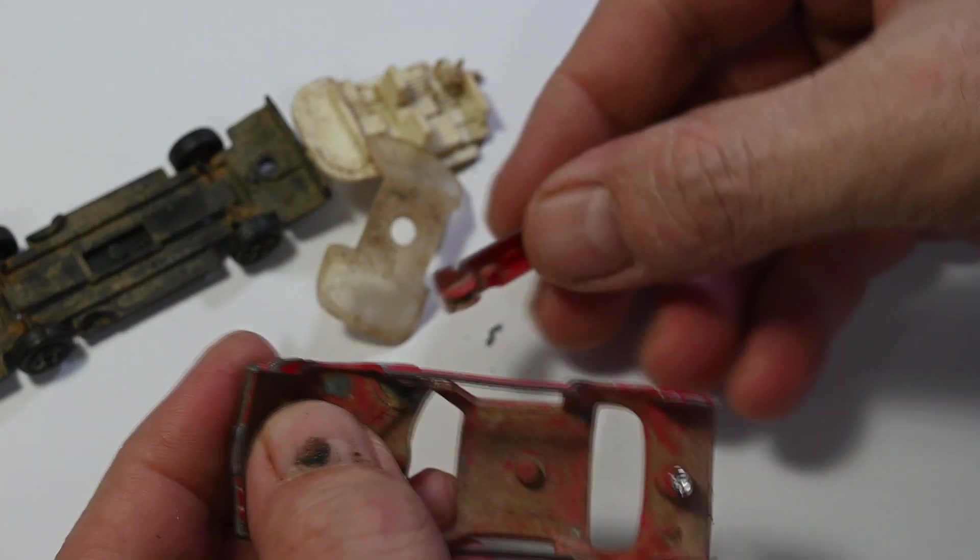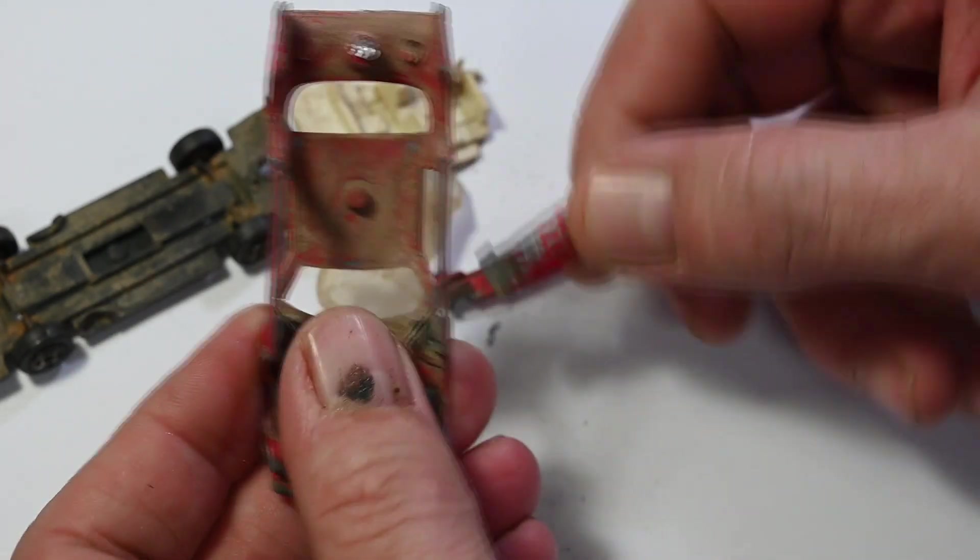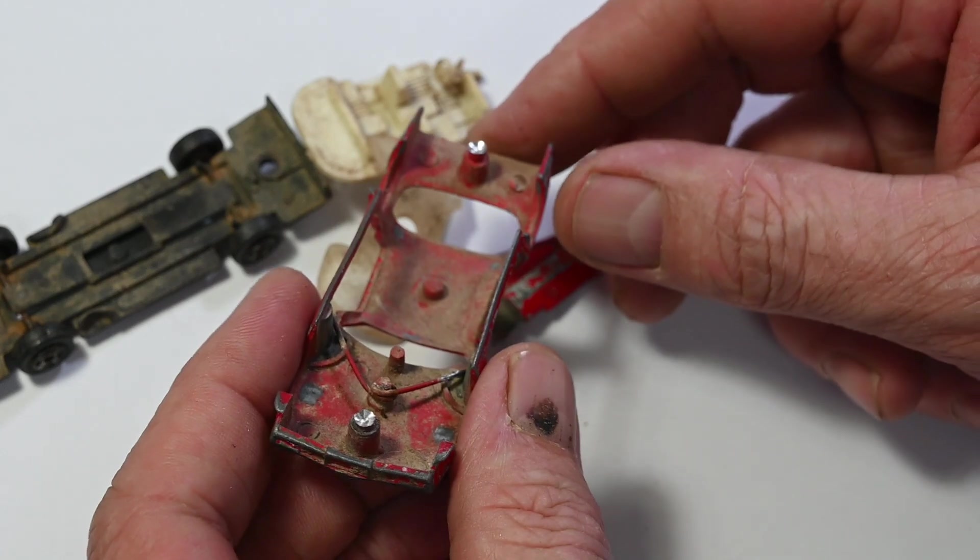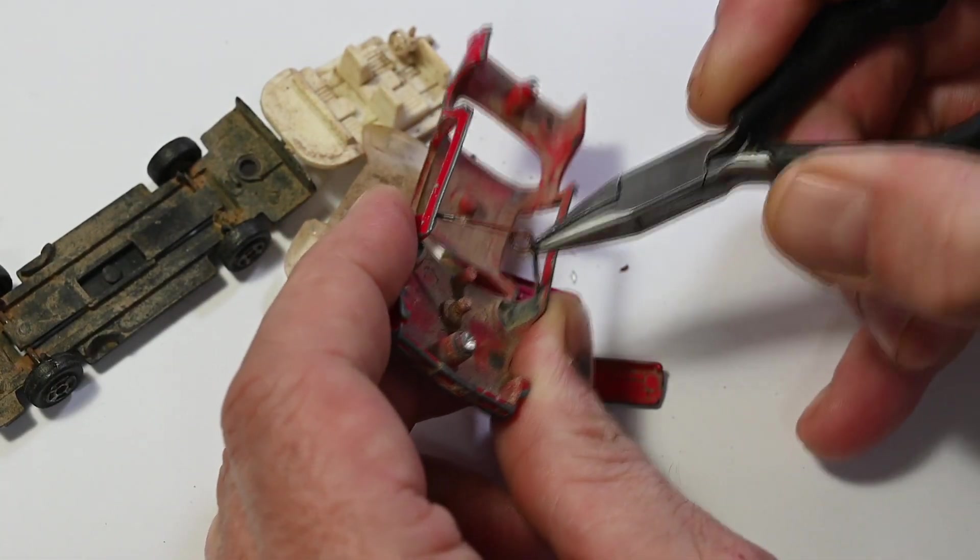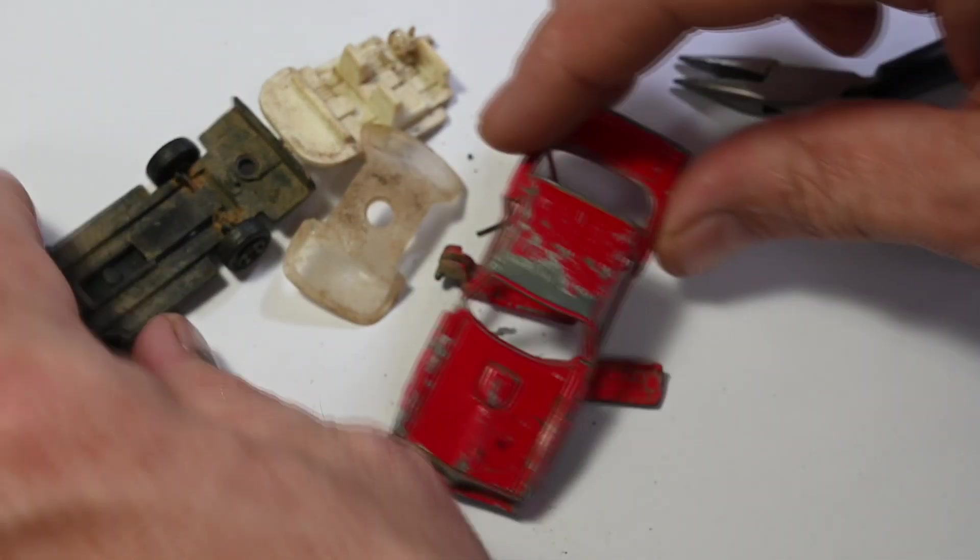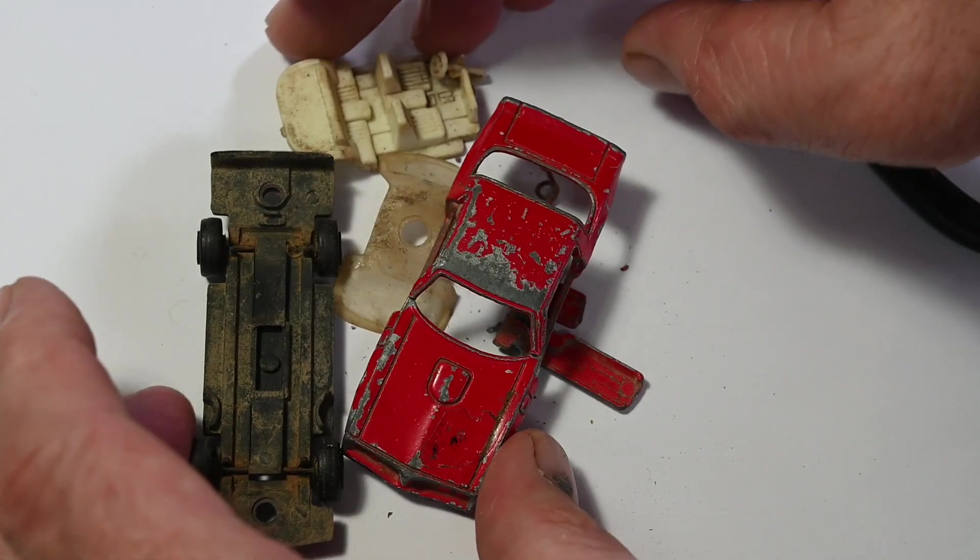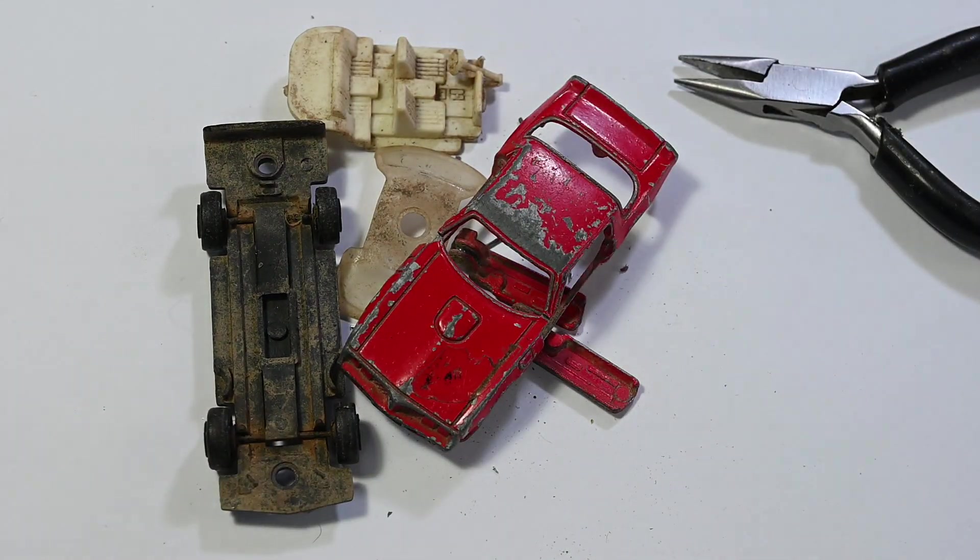I'll pop the doors out. And then they're held in by this bent piece of wire. Just using my pliers there to take that out. And there's all of the parts of our Transan.